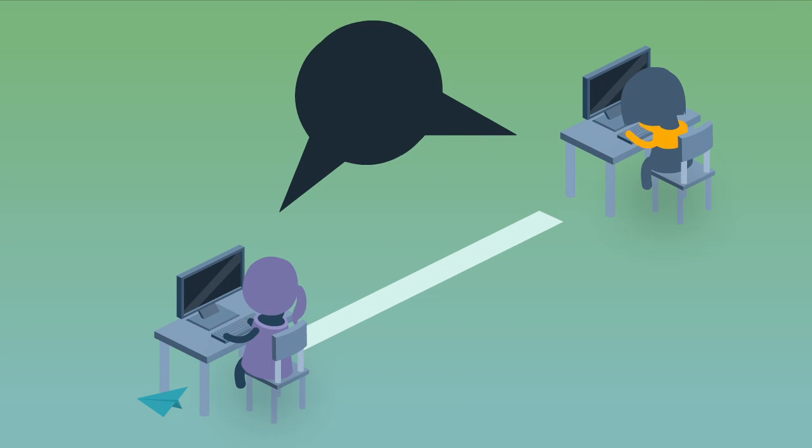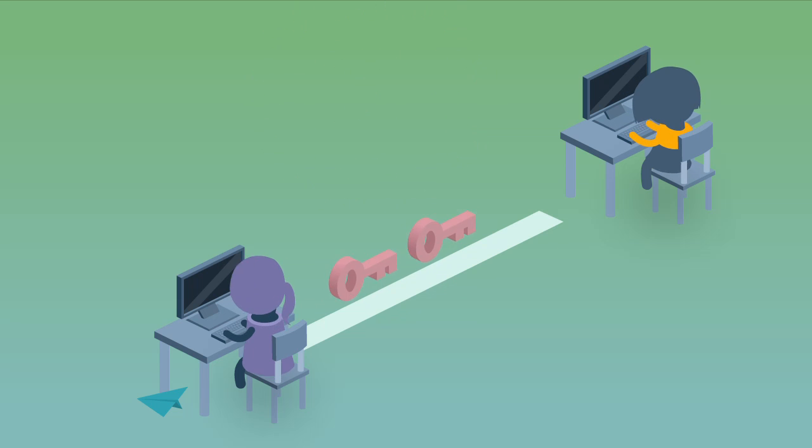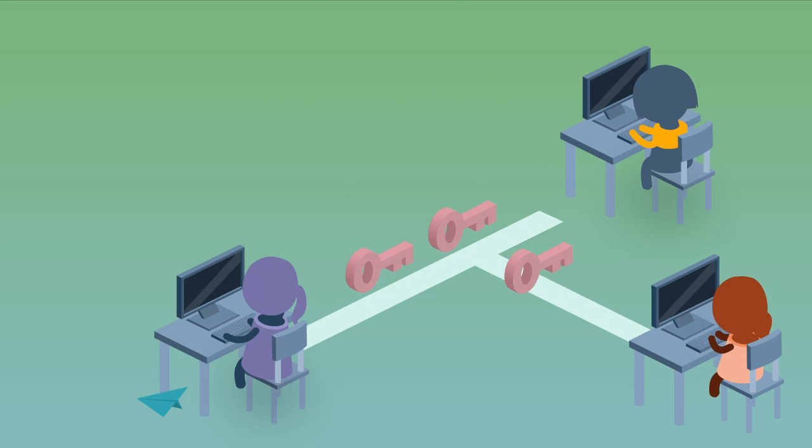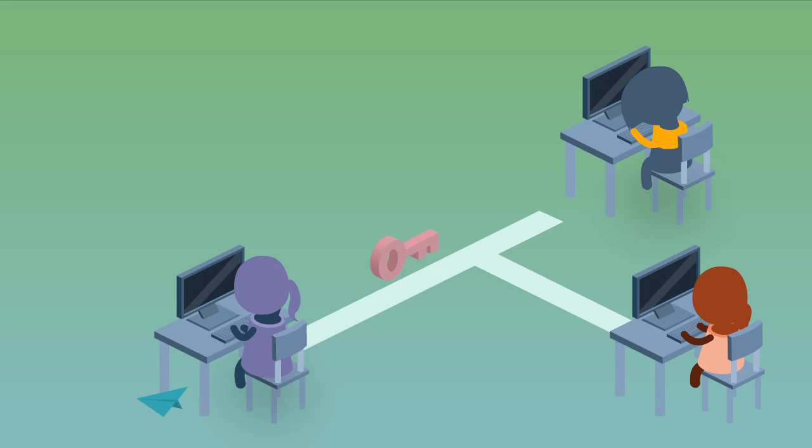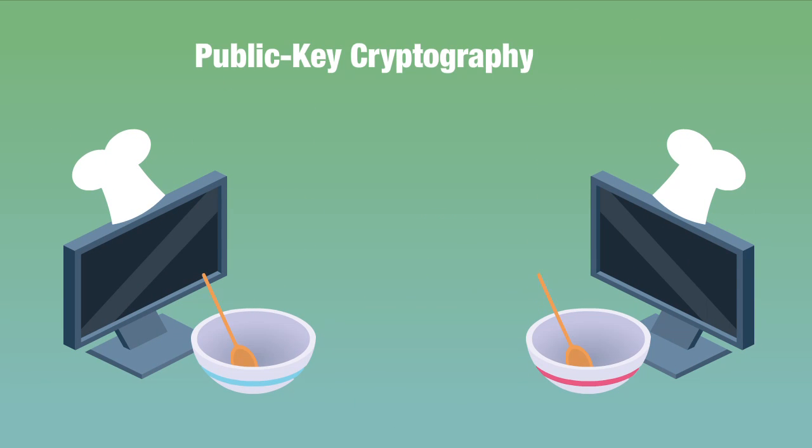First, your email services need to agree on a secret key, a very large number, that will be used to lock and then unlock your message. But they can't just send that number over the internet because an eavesdropper could intercept it. So they use a brilliant trick called public key cryptography.